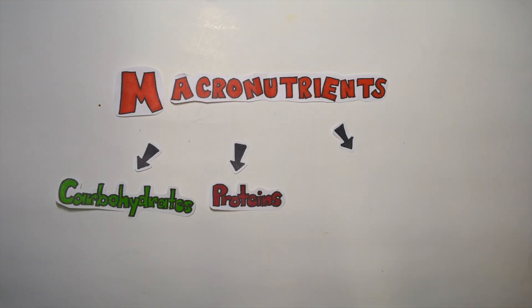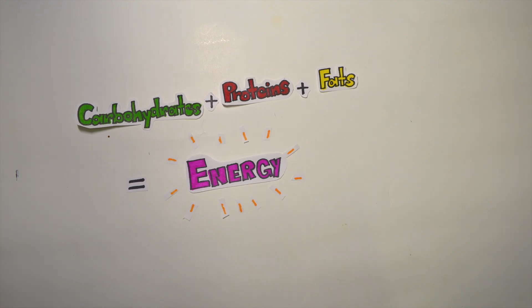Macronutrients consisting of carbohydrates, proteins, and fats supply energy for our body, but what exactly are they?